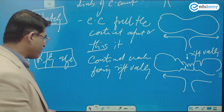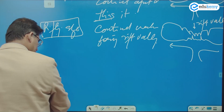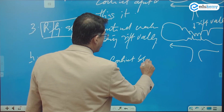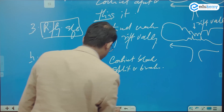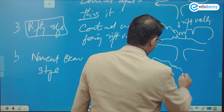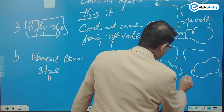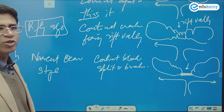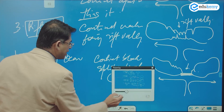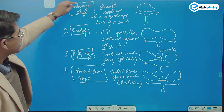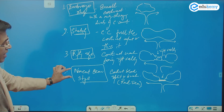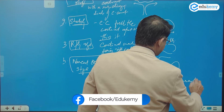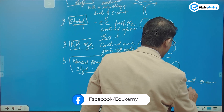The fourth stage is the Nascent Ocean Stage. The continental block splits and breaks apart. A new basalt layer forms — a new ocean floor — something like the Red Sea. This is the nascent ocean with basaltic floors.